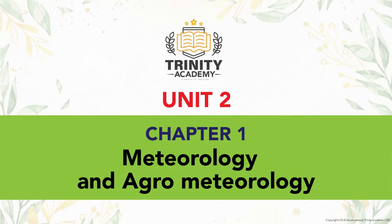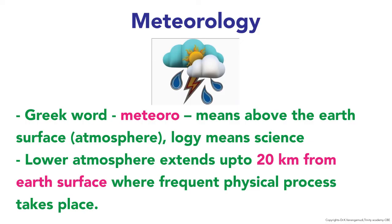Let me discuss Chapter 1: Meteorology and Agricultural Meteorology, which comes under Unit 2. 'Meterio' is the Greek word meaning above the Earth's surface, that is, the atmosphere. 'Logi' means science. The lower atmosphere extends up to 20 kilometers from the Earth's surface, where frequent physical processes take place.